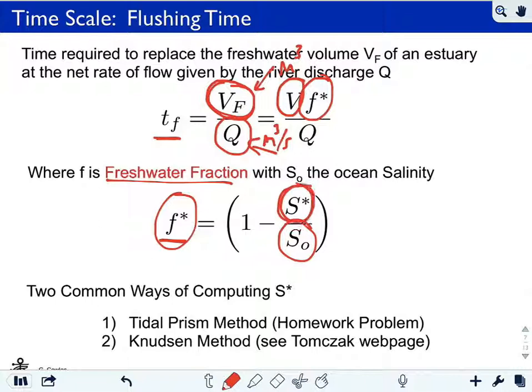If the water within the estuary is all equal to the open ocean salinity, then this second ratio is going to be equal to one, and everything in parentheses here will be zero, and your fresh water fraction will be zero. You essentially have zero fresh water.